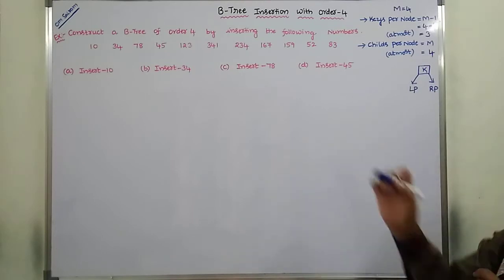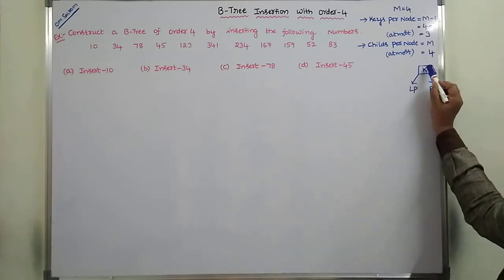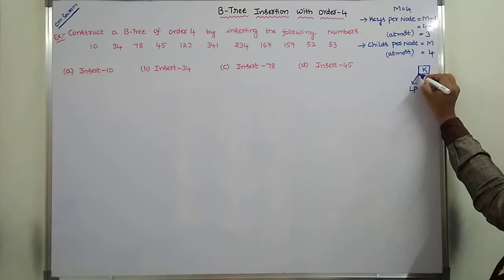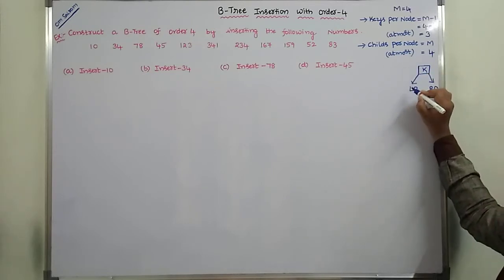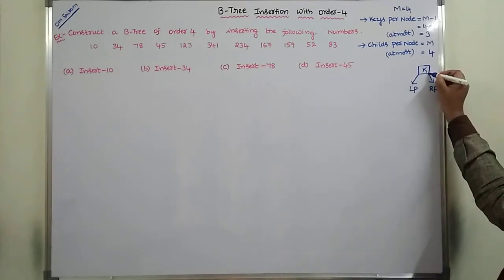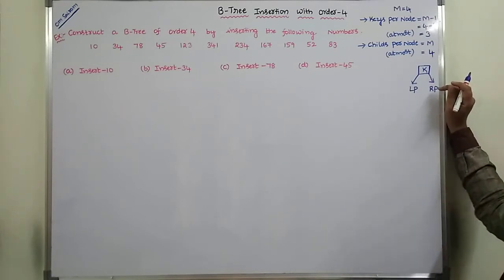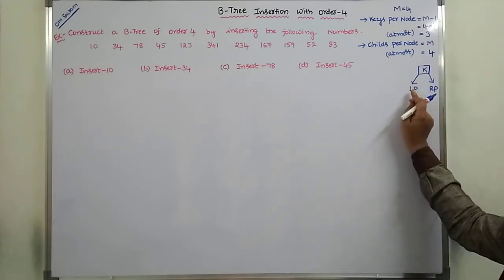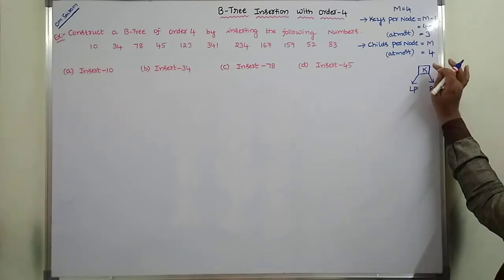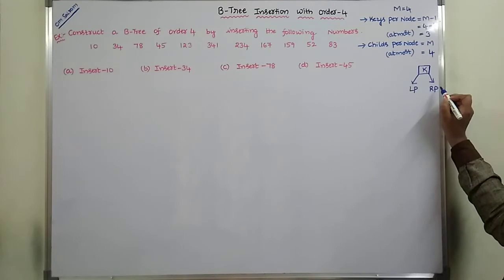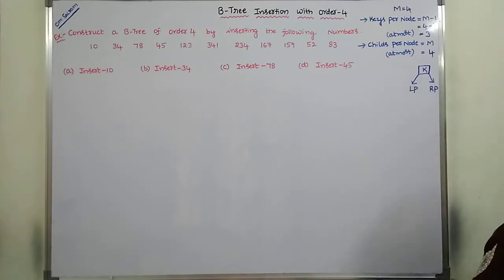This is the notation I am following while constructing the B-tree of order 4. For a node K, the left pointer points to a left sub-tree that contains all the nodes less than K, and the right pointer points to a right sub-tree that contains all the elements greater than K.